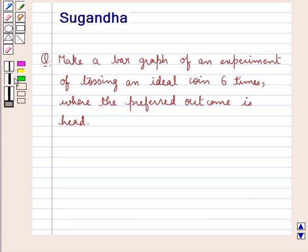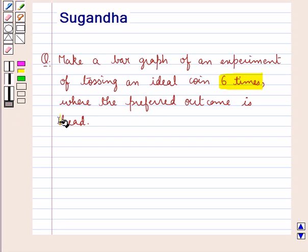Hello and welcome to the session. In this session we discuss the following question which says: draw a bar graph of an experiment of tossing an ideal coin 6 times where the preferred outcome is head.